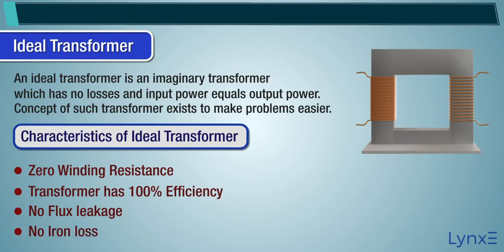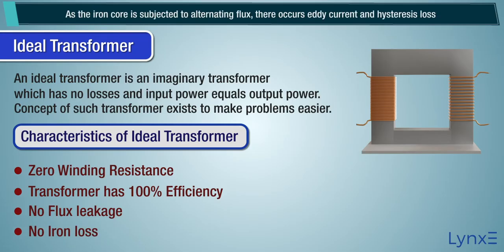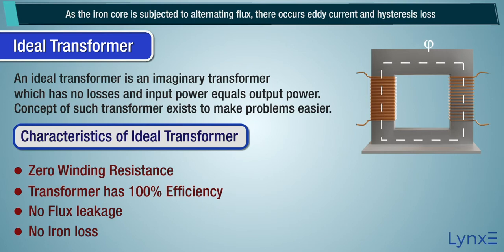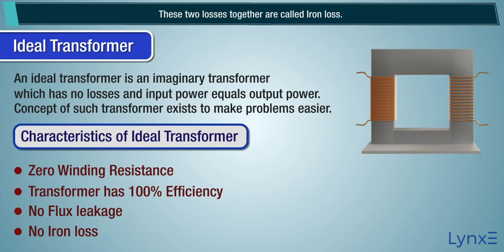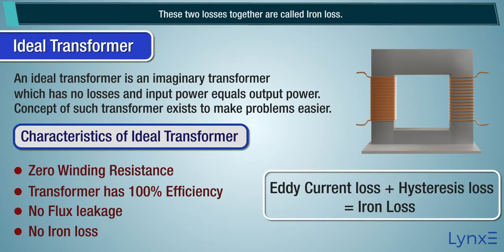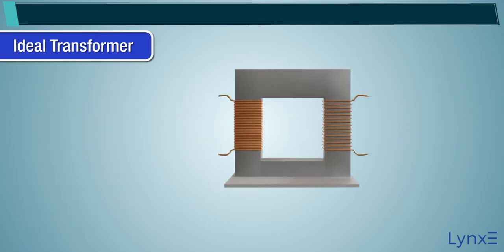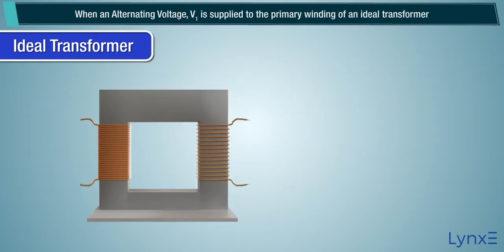No iron loss. As the iron core is subjected to alternating flux, there occur eddy current and hysteresis losses. These two losses together are called iron loss, and it is zero in an ideal transformer.